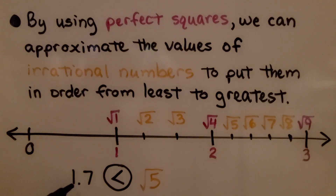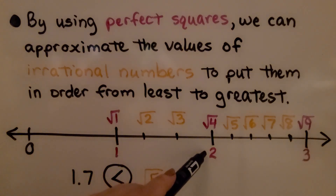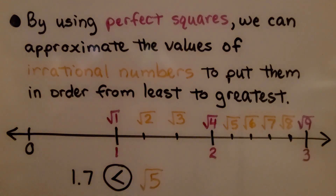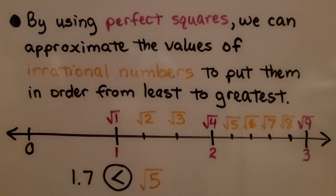For 1 and 7 tenths compared to the square root of 5: 1 and 7 tenths is less than 2, and the square root of 5 falls between 2 and 3, so we know the square root of 5 is greater. 1 and 7 tenths is less than the square root of 5.